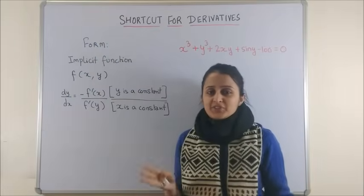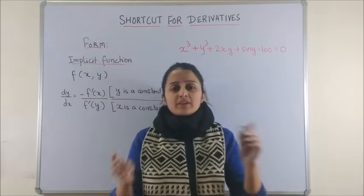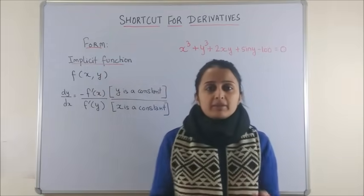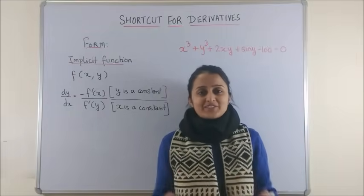This trick is for the form of an implicit function. Implicit function means when your x and y become inseparable. That means you cannot get your y completely in terms of x or vice versa.